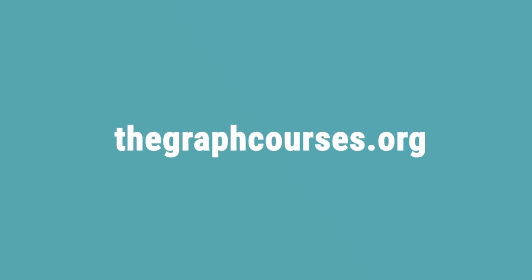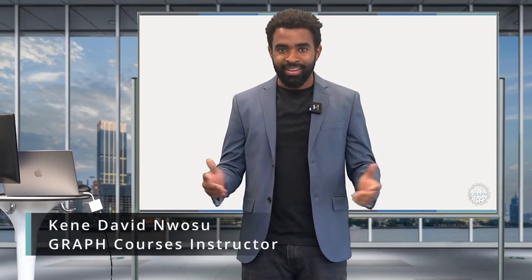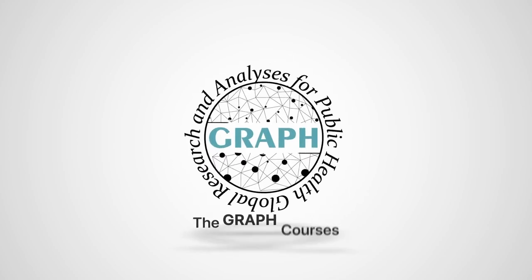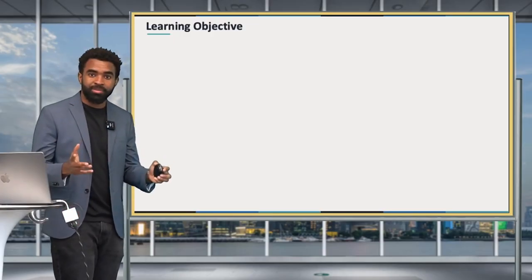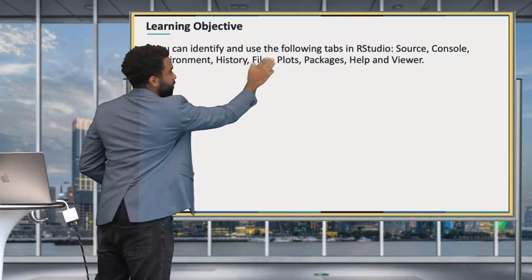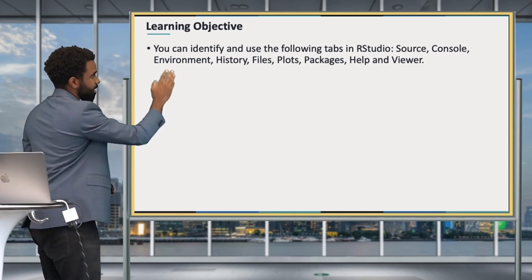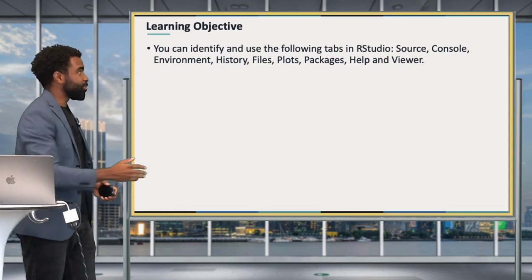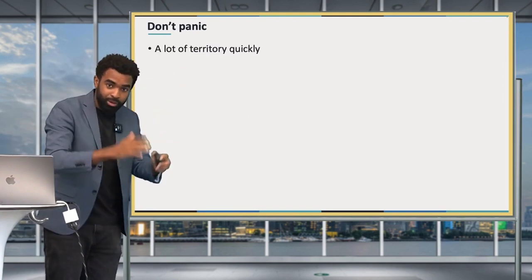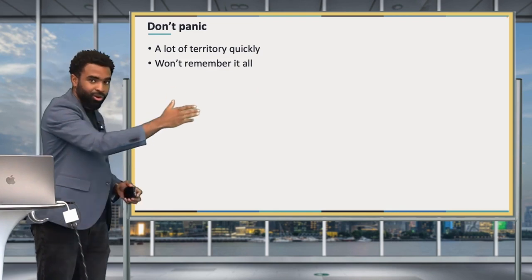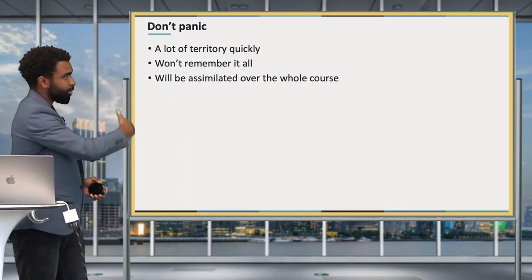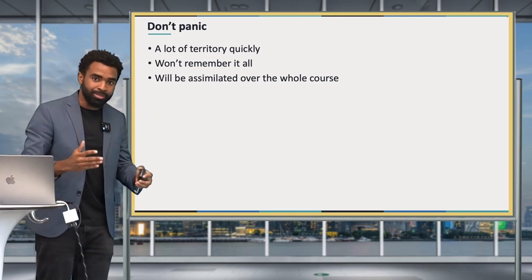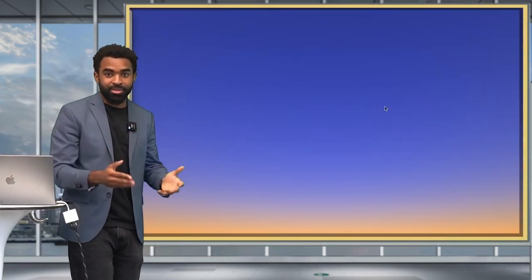Hello and welcome back. Now that you have access to the required software, we're going to go on a quick tour of RStudio — your digital home for a long time to come. Your learning objective for this session is that you can identify and use the following tabs in RStudio: the Source, Console, Environment, History, Files, Plots, Packages, Help, and Viewer. There's a lot to cover, so don't panic — you'll assimilate this material as you encounter it many times throughout the course.